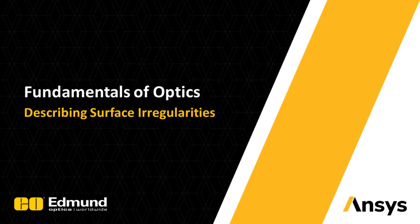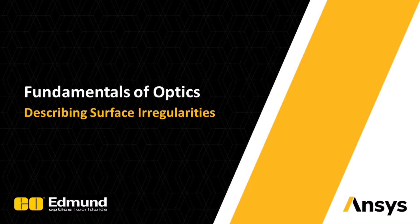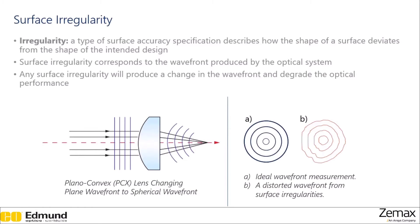Welcome. In this section, we're going to go into the descriptions of surface irregularity, which is a slightly more complex topic than we've covered in this course, and hopefully will give you an idea of what types of things you may encounter as you go through your optical design career. Surface irregularity is a type of surface accuracy description that describes how the shape of a surface deviates from the shape of the intended design.